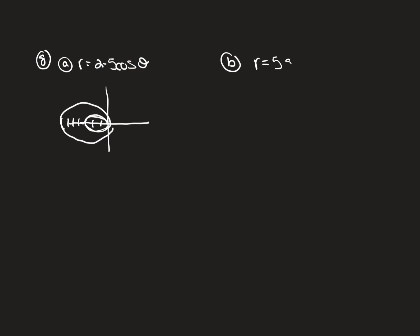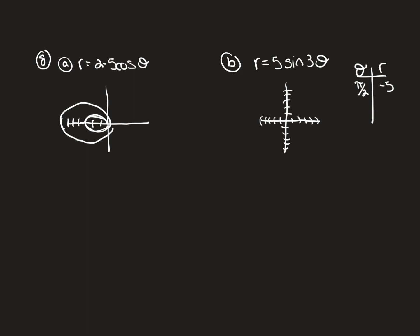Part B is r = 5sin(3θ). This is a rose with 3 petals of length 5. To find where a petal falls, plug in θ = π/2: 3·(π/2) = 3π/2, and sin(3π/2) = −1, so r = −5. Going to the π/2 axis and then backwards 5 units places a petal pointing in the negative y-direction. The other two petals split the remaining space evenly in the upper half.